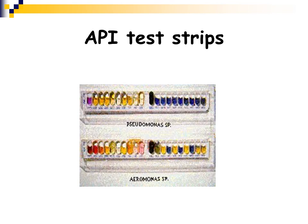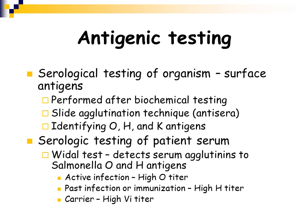You can also do antigenic testing in the microbiology laboratory. You can use serological testing to look for surface antigens — these are usually agglutination types of reactions. You can do slide agglutinations using anti-sera to identify the O, H, and K antigens on the surface. You can do a Widal test, which detects serum agglutinins to the Salmonella O and H antigens, to confirm that a patient does have Salmonella.